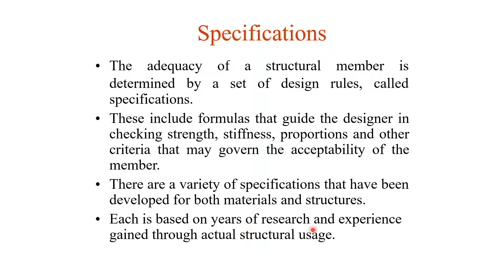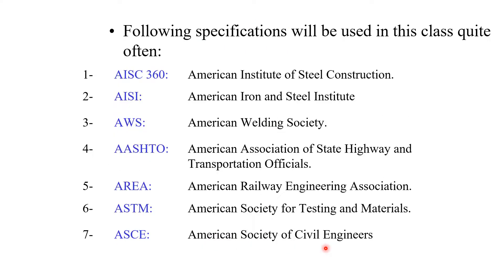Each specification is based on years of research and experience gained through actual structural usage. The main codes for steel design are: AISC 360 (American Institute of Steel Construction) for designing steel members; AISI (American Iron and Steel Institute) for steel section databases; AWS (American Welding Society); AASHTO (American Association of State Highway and Transportation Officials); AREA (American Railway Engineering Association); ASTM (American Society for Testing and Materials); and ASCE (American Society of Civil Engineers).